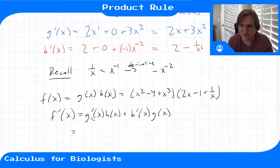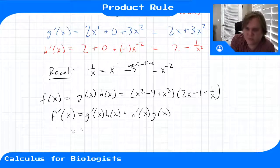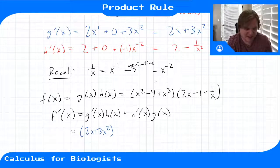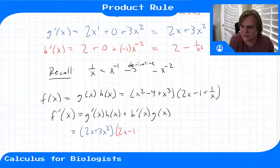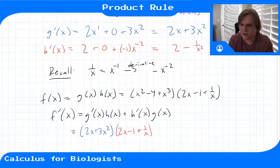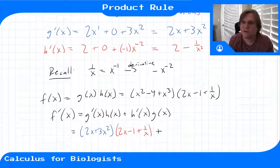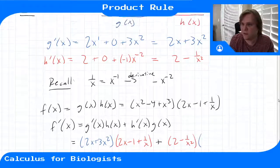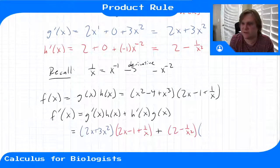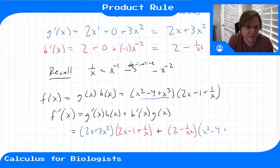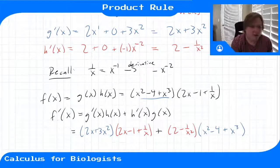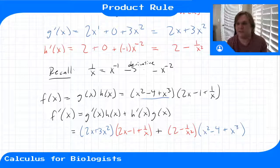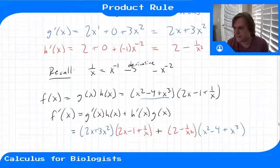So 2x plus 3x squared is the derivative of g, g prime, times h, which is 2x minus 1 plus 1 over x. And then plus the derivative of h, h prime is 2 minus 1 over x squared, times g which was x squared minus 4 plus x cubed. Then this would be our derivative of f. It's kind of complicated looking and we can factor these out as well. We get the same thing as if we factored it out before we took the derivative, but we won't do that.